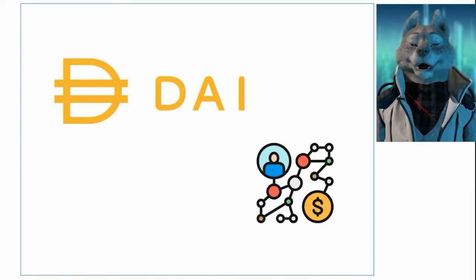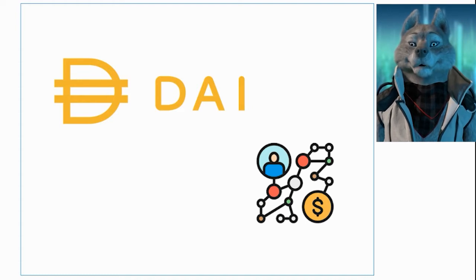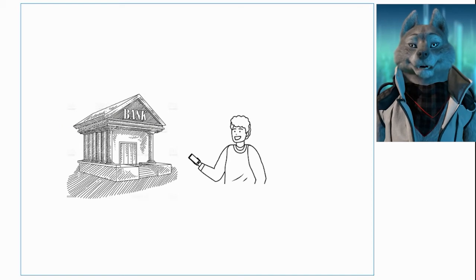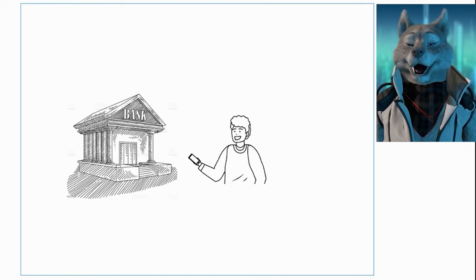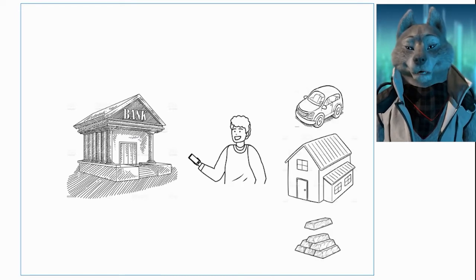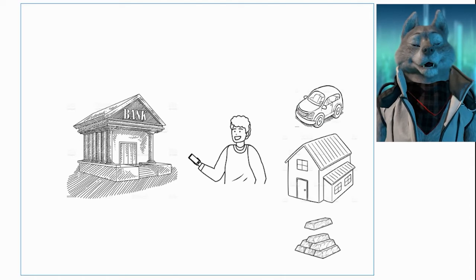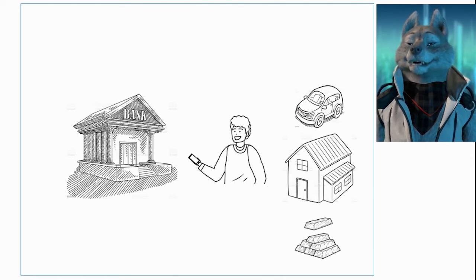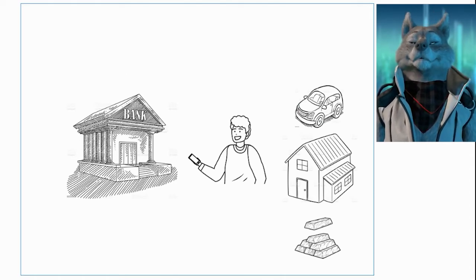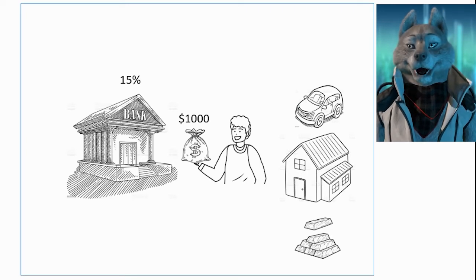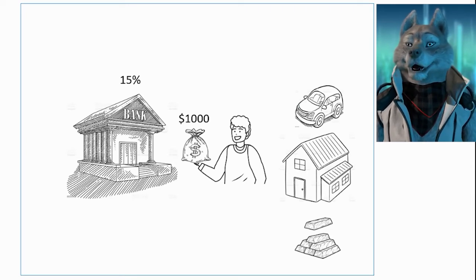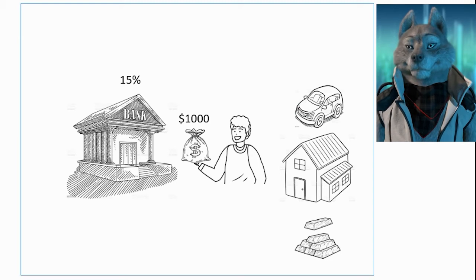In the case of the DAI cryptocurrency, this mechanism is based on the concept of a loan with guarantees. For example, let's say you want to take out a $1,000 loan from a bank. Usually, the bank will require some collateral, which can be used in the future to repay the loan if you don't pay back what you owe. The bank will also charge interest on the loan. The DAI cryptocurrency model works the same way — you can borrow dollars by providing a guarantee and paying interest.